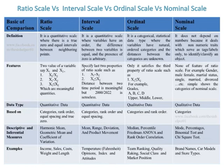The data type of ratio scale and interval scale are quantitative data, while the data type of ordinal scale and nominal scale are qualitative data. Ratio scale is based on categories, rank order, equal spacing, and true zero; interval scale is based on categories, rank order, and equal spacing; ordinal scale is based on categories and rank order; while nominal scale is based on categories only.